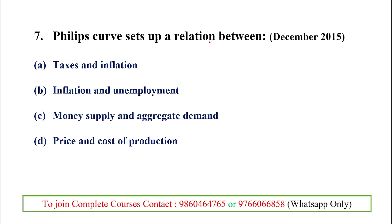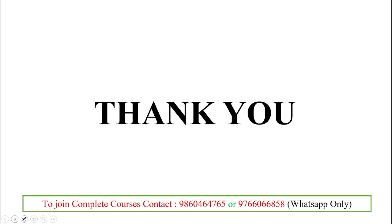A final question is left for viewers: the Phillips curve sets up a relation between what — taxation and inflation, inflation and unemployment, money supply and aggregate demand, or price and cost of production? Please type your answer in the comment box, and ask any queries there as well. We wind up this session and will meet in the next video. Thank you.